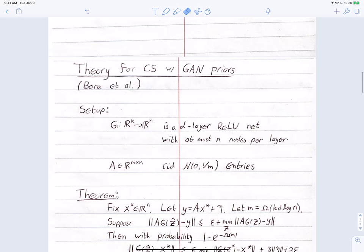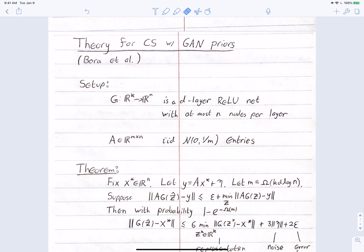Let's start with the theory for compressed sensing with GAN priors, following closely the Bora paper. The setup is that g: R^k → R^n is a d-layer ReLU neural network with at most n nodes per layer, and for simplicity the measurement operator is random — specifically with i.i.d. N(0, 1/m) entries.